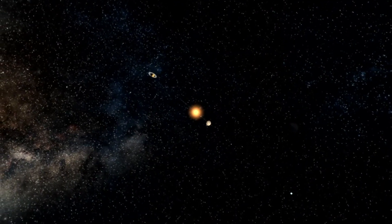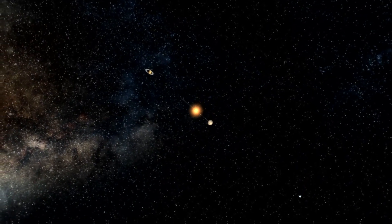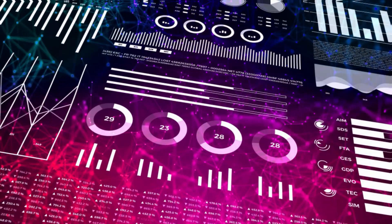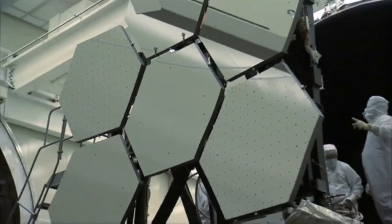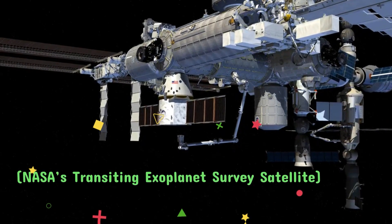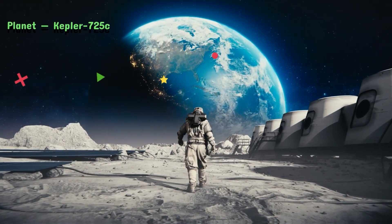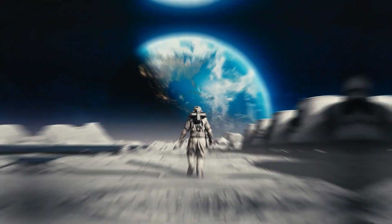Kepler-725b, a known exoplanet orbiting the star Kepler-725, had shown small variations in its transit timing for several years. After extensive modeling and re-analysis of Kepler data, supported by follow-up observations with ground-based telescopes and TESS, NASA's Transiting Exoplanet Survey Satellite, scientists concluded that another planet, Kepler-725c, was influencing the orbit of its sibling planet.